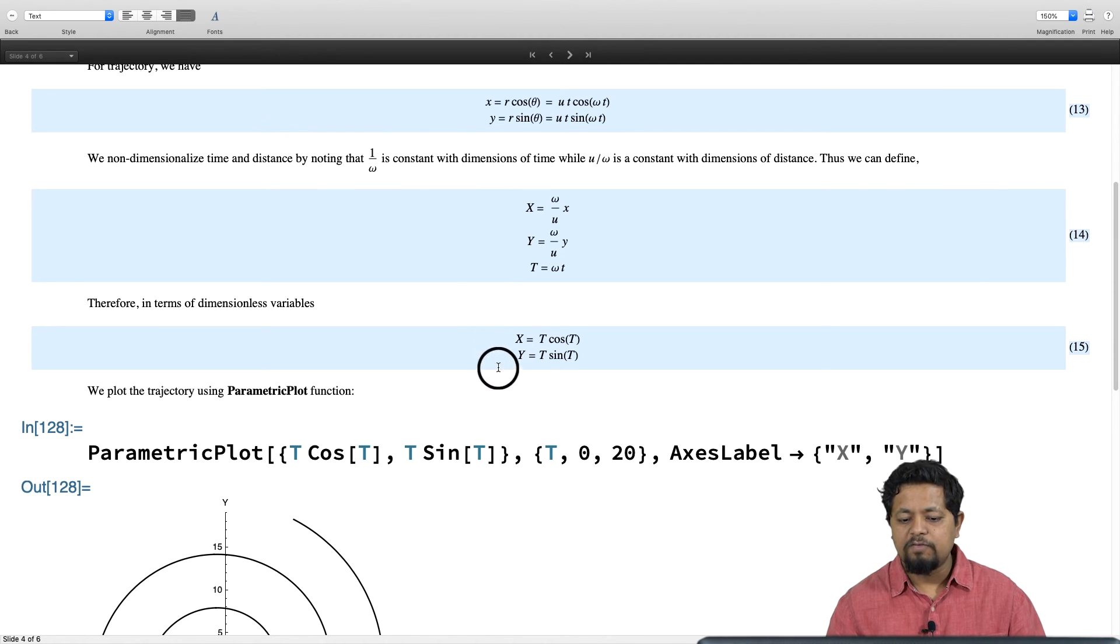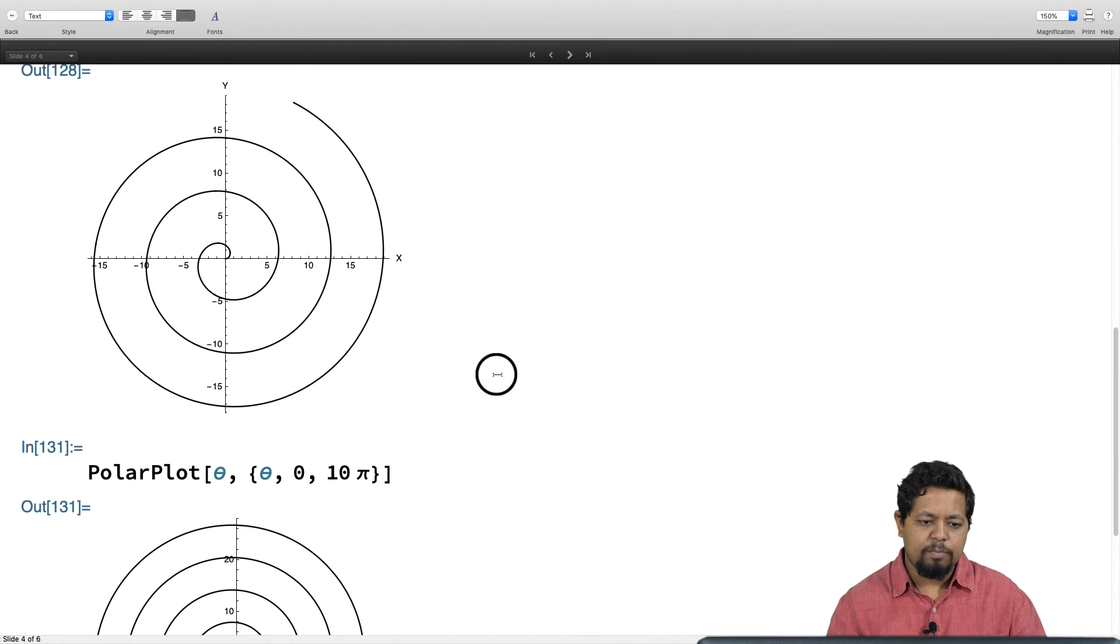As we change u and omega, we change the scale with which we measure x, y, and t. On this particular plot, the meaning of one unit of x or one unit of y will change if I change u and omega.